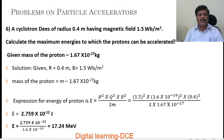We can also convert this Joules into electron volt by dividing by 1.6 into 10 power minus 19 Coulomb, because 1 eV is equal to 1.6 into 10 power minus 19 Joules. So the value of energy in electron volt is 17.24 MeV.